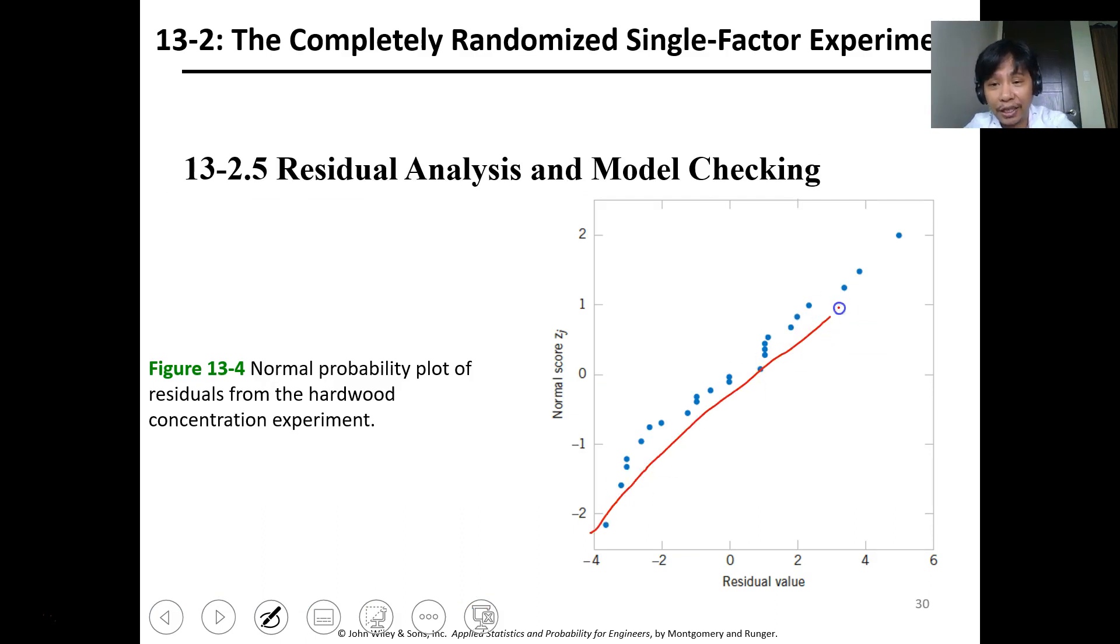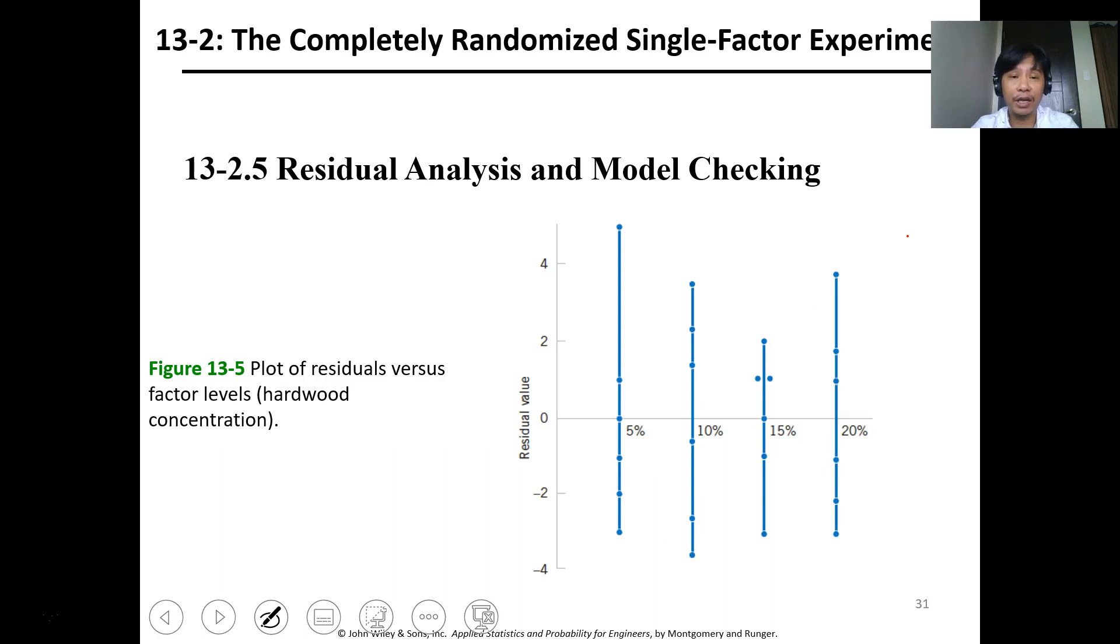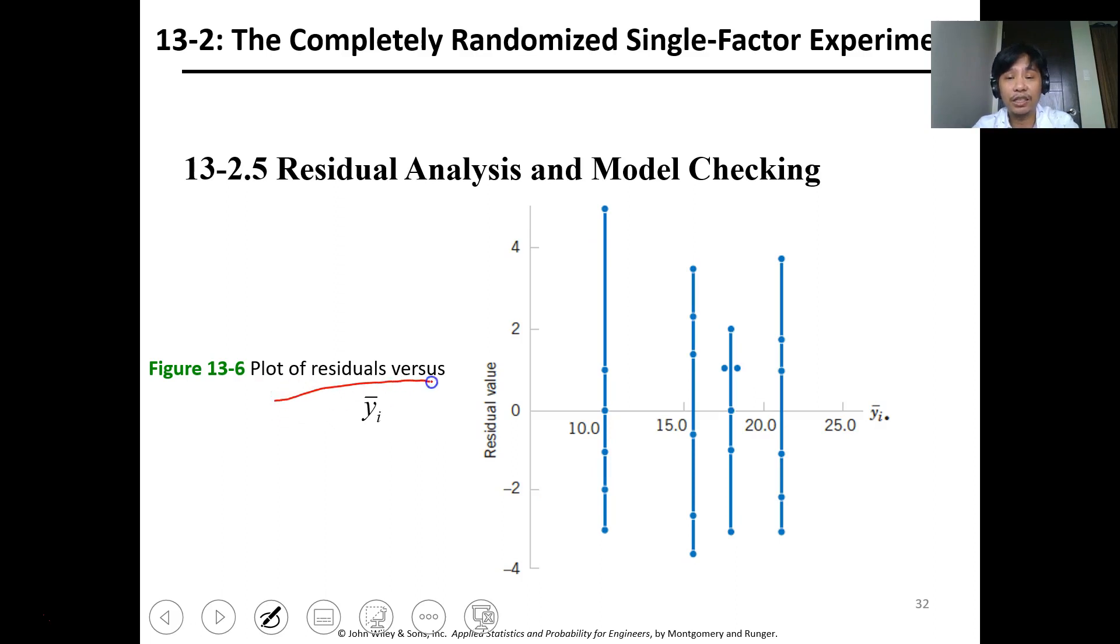When you plot them and get a linearized trend for the data, it provides information that the data follows the normal distribution. Then we can plot the residual plot versus the factor level. This is the factor. As you can see here, the data follows a good relationship, and plotting the residual versus the average, you can see the significant difference in values.